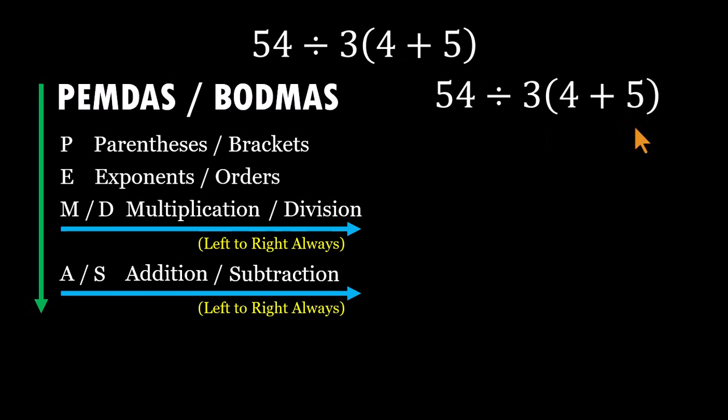All right, let's apply that here. Parentheses first, 4 plus 5 equals 9. Here, parentheses imply multiplication. So the expression becomes 54 divided by 3 times 9.